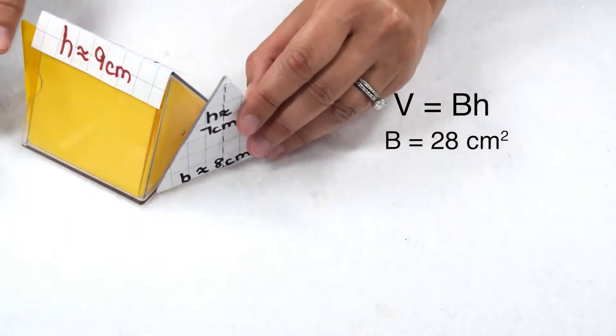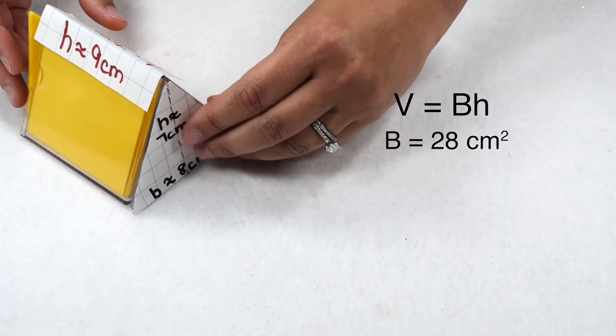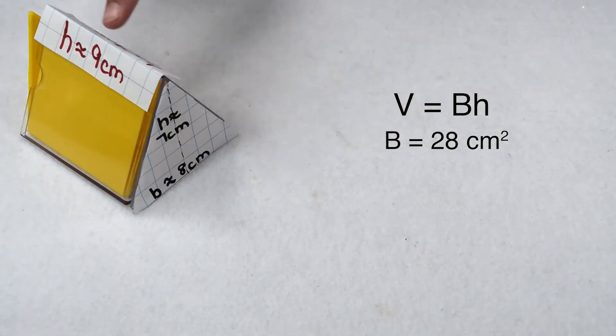We then need to multiply that by the height of our prism. We'll notice this triangular prism is turned on its side, so height is horizontal instead of vertical. No matter which way it's turned, height is always going to be the distance between our bases.